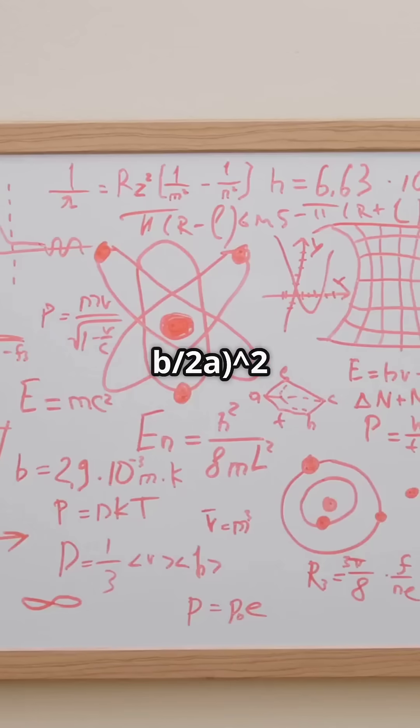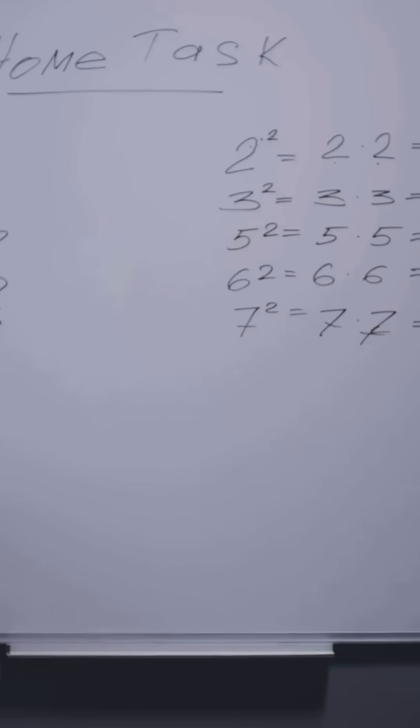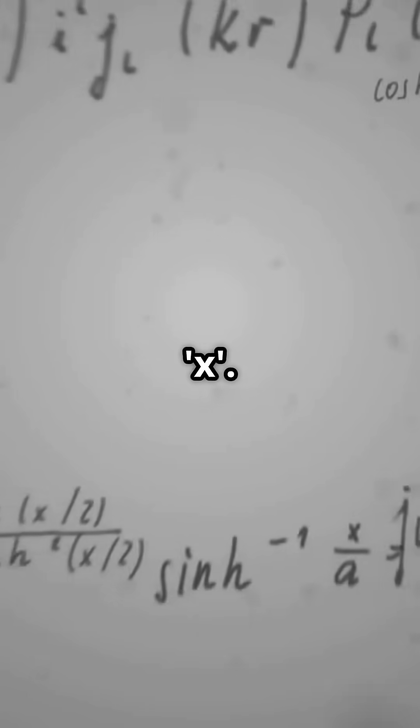It now looks like this: x plus b over 2a squared equals something. Last step, take the square root of both sides and solve for x.